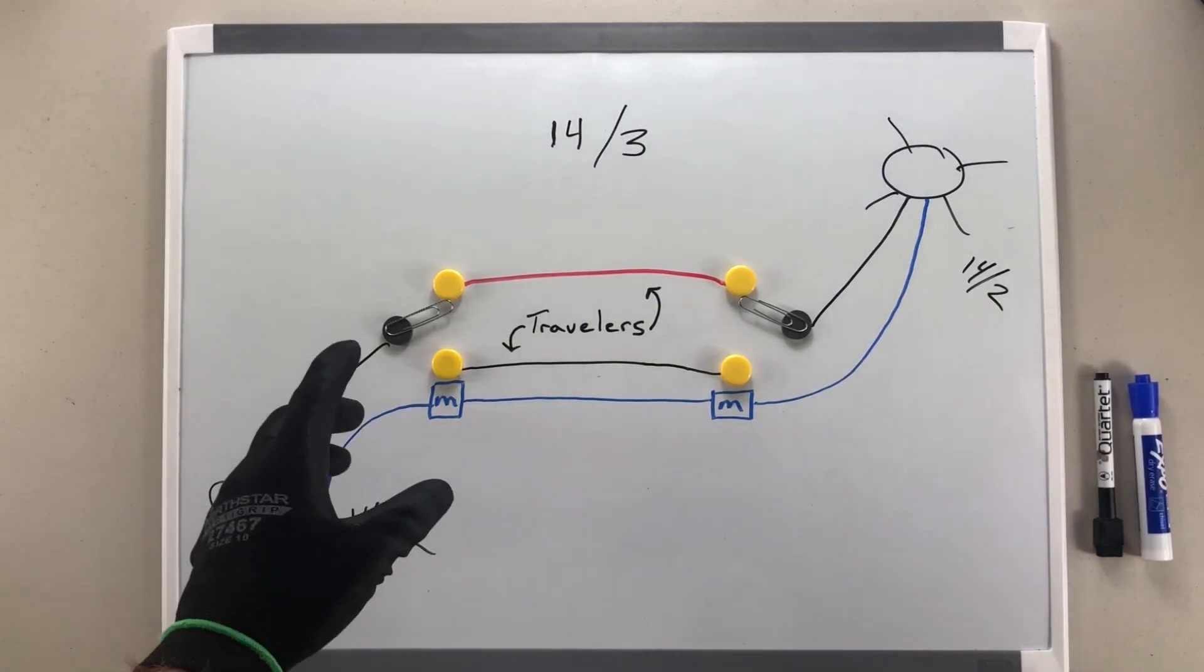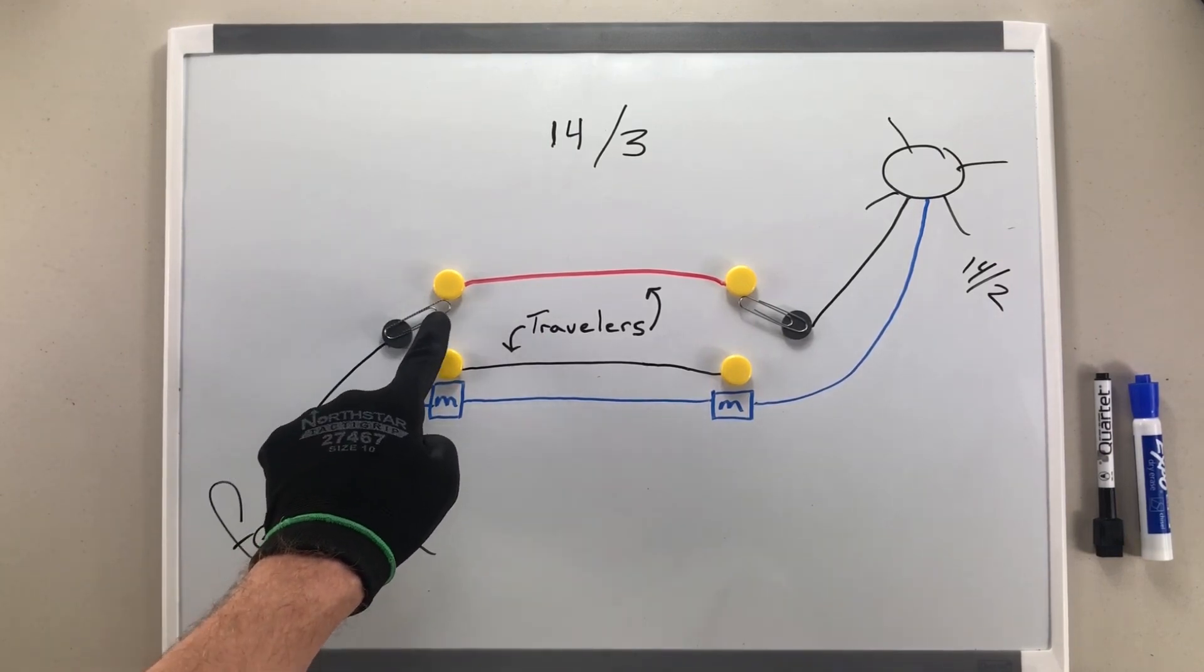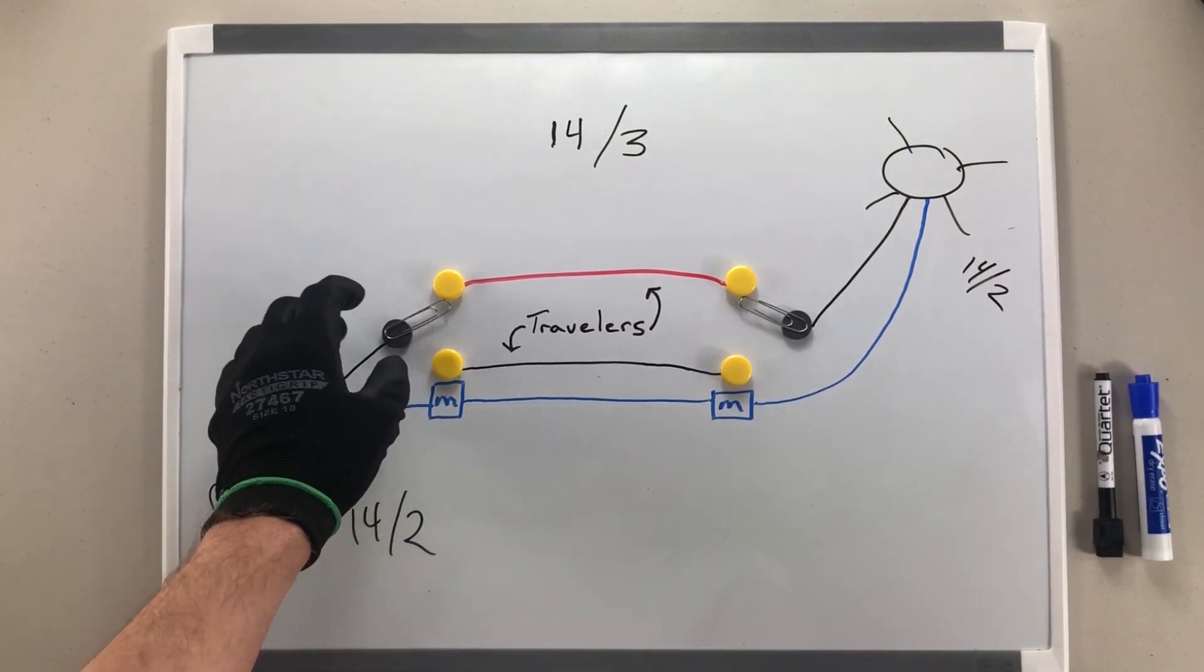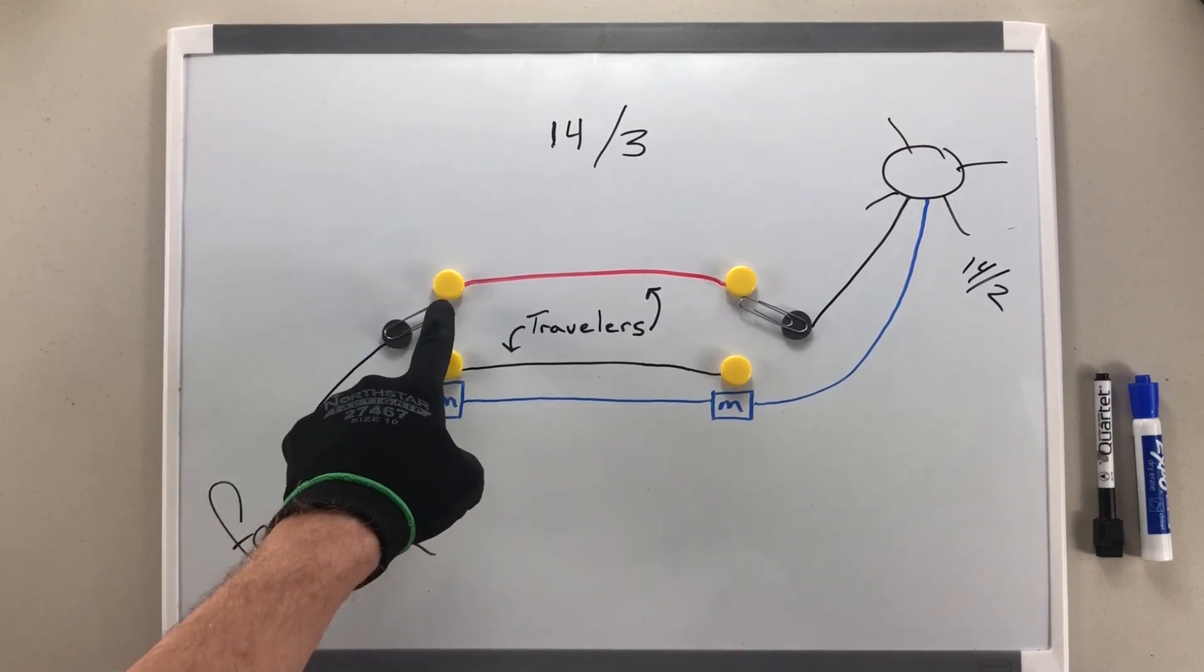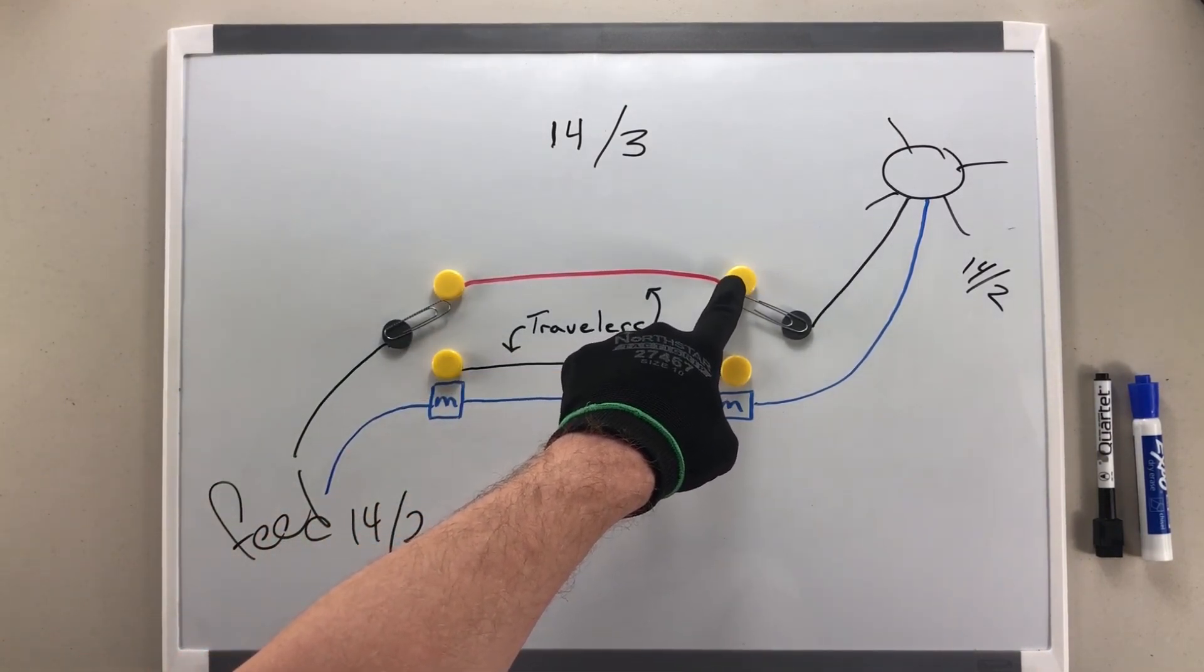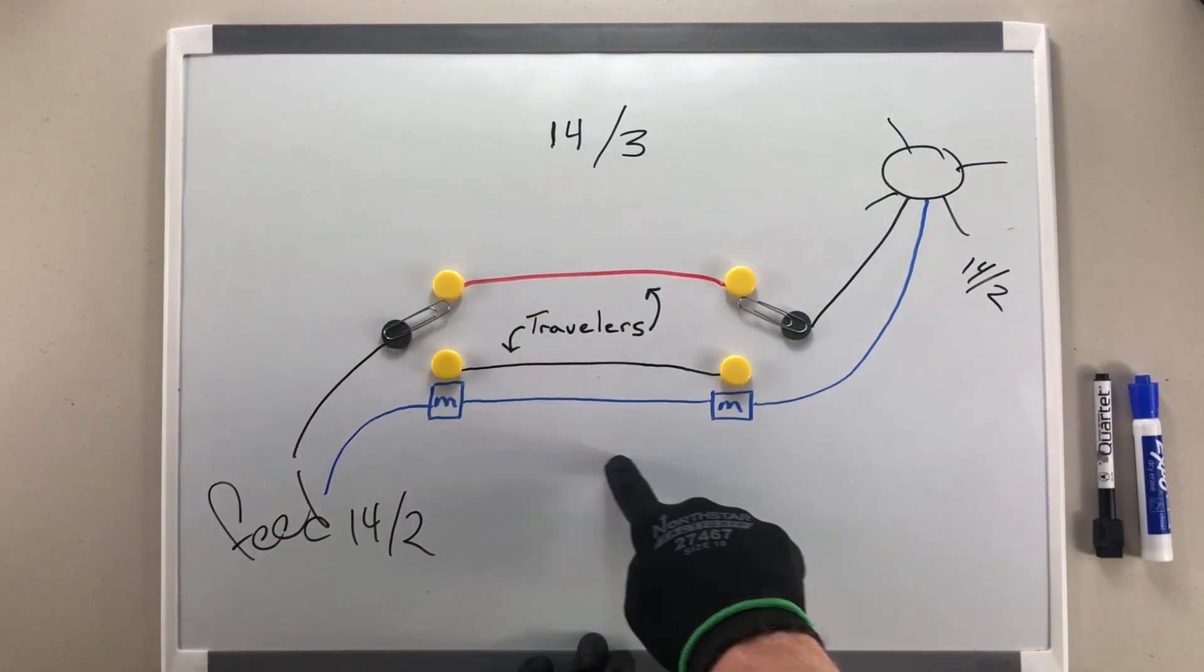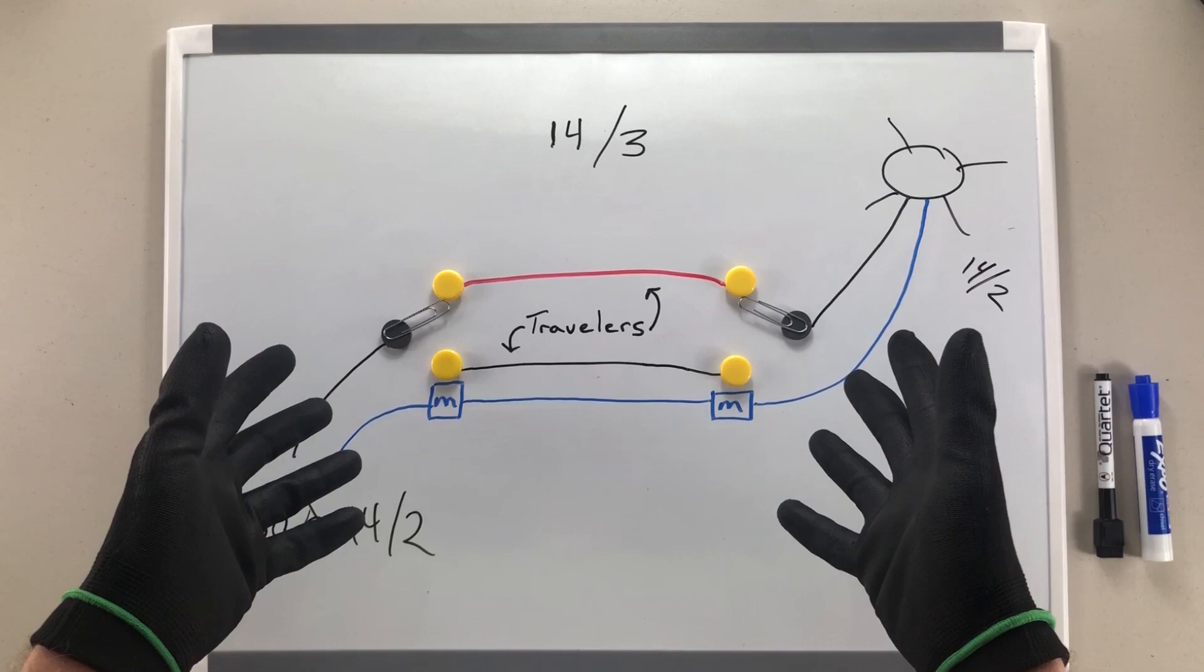The way this works is your power comes in on your common screw here, up through your knife blade inside your switch, and into your traveler terminal here, across to this traveler terminal, down into your common screw, up into your light, and returns on your neutral. In this condition, the light is on.